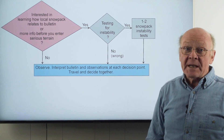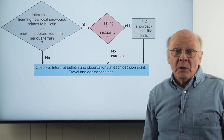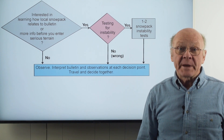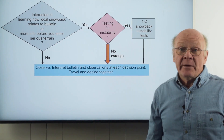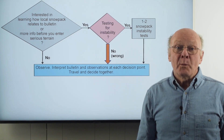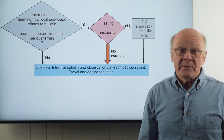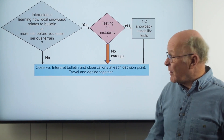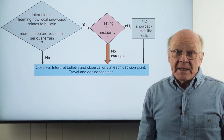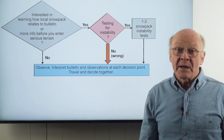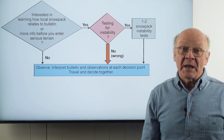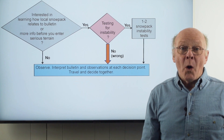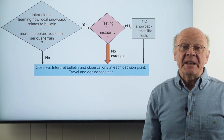So your group has decided to dig, either because you want to learn how the local snowpack relates to the bulletin, or because you're approaching a serious slope along your route. Here's the kicker: in the context of recreational decisions, snowpack tests are poor indicators of stability. If you think a particular result from an instability test will tell you the slope is stable, forget it. Snowpack tests sometimes give false indications of stability, and the consequence can be your life. If the test indicates instability, then you should avoid nearby serious avalanche slopes. This may mean turning around or switching to the more cautious route in your trip plan. An instability test should never convince you an avalanche slope is stable.